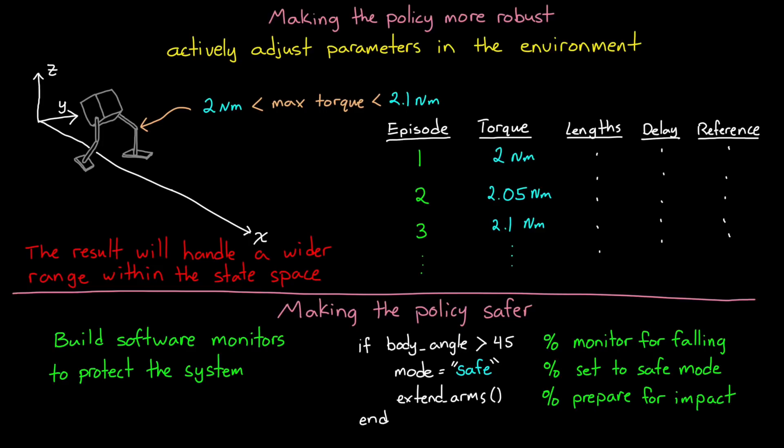Both the fix to increase robustness and safety are kind of workarounds to the limitations that we have with a learned neural network policy. However, there is a way to use reinforcement learning and still be able to take advantage of the result being as robust, safe, changeable, and verifiable as a traditionally architected control system.